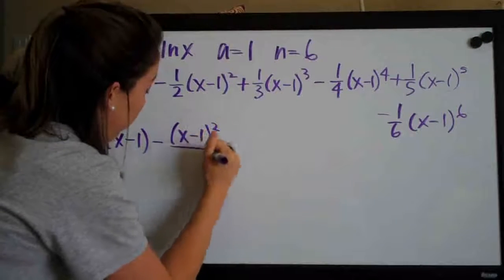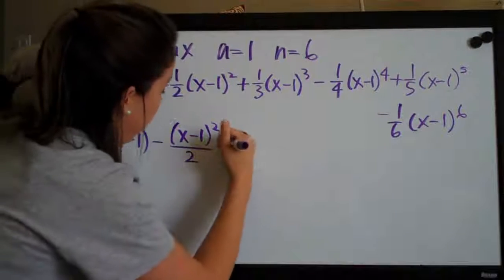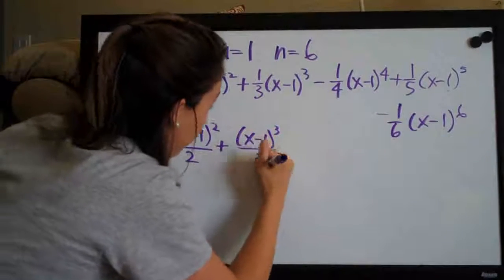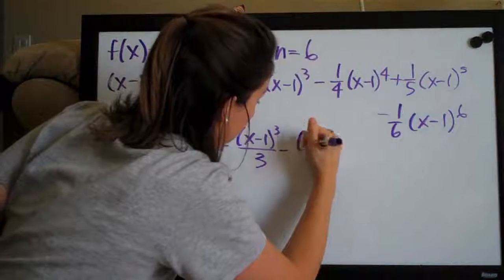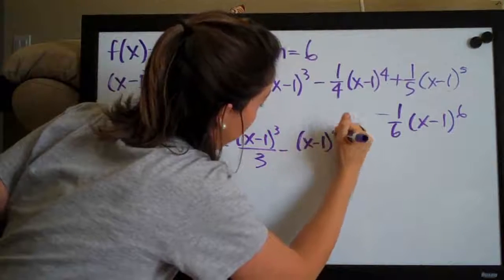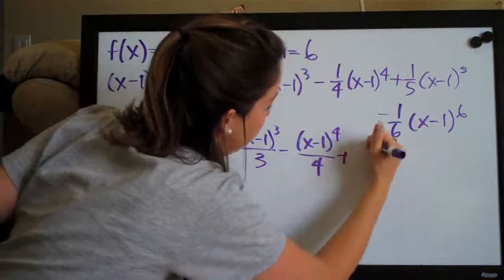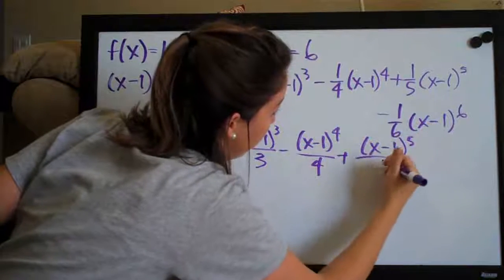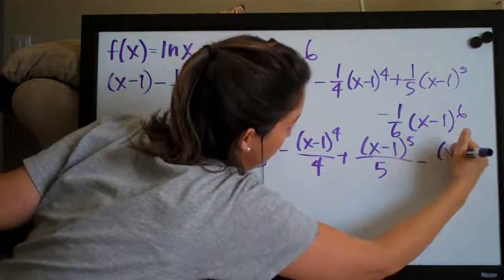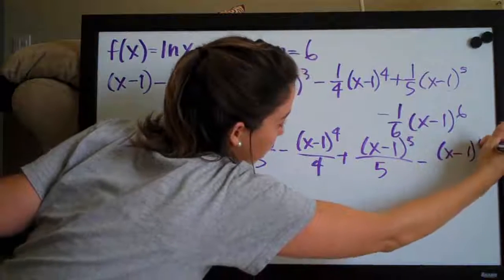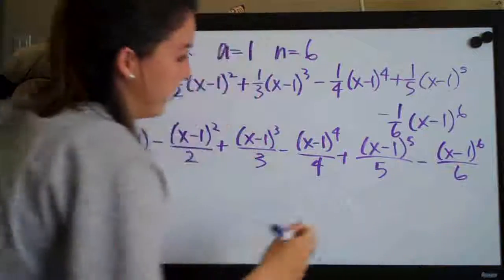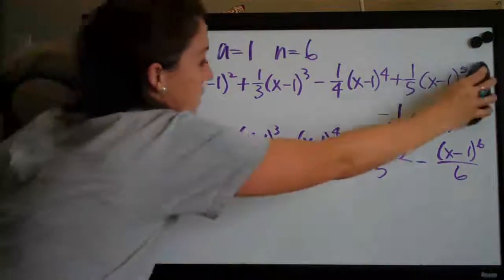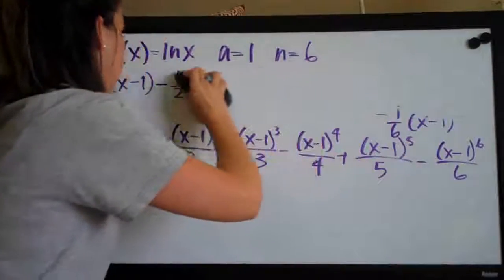x minus one squared over two, like that, plus x minus one cubed over three minus x minus one to the four over four plus x minus one to the five over five minus x minus one to the six over six. So that, I think, is our final simplified Taylor polynomial.